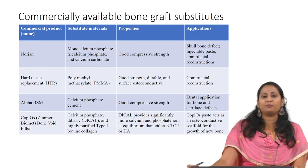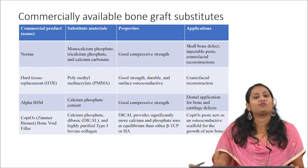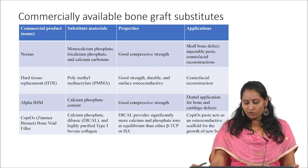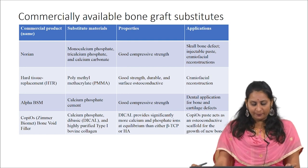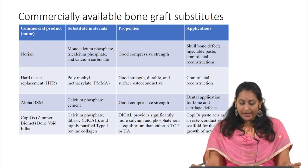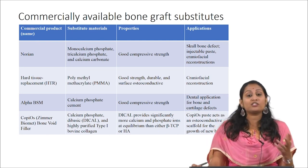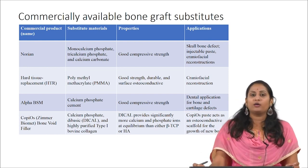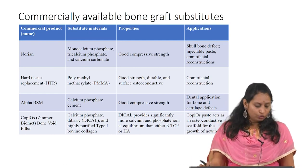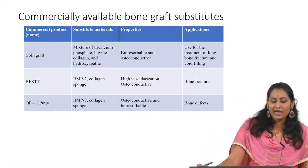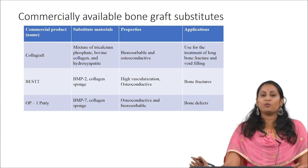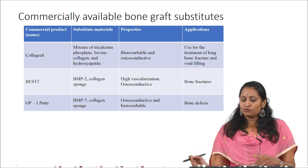Alpha BSM is a ceramic-based calcium phosphate cement with good compressive strength used in dental applications and bone and cartilage defects. Scorpio OS paste is made of calcium phosphate and type-1 bovine collagen — a natural and synthetic polymer composite — providing more calcium and phosphate ions at equilibrium than either beta-TCP or hydroxyapatite alone, acting as an osteoconductive scaffold for new bone growth. Collagraft is a mixture of tricalcium phosphate, bovine collagen, and hydroxyapatite — bioresorbable and osteoconductive — used for long bone fractures and void filling.